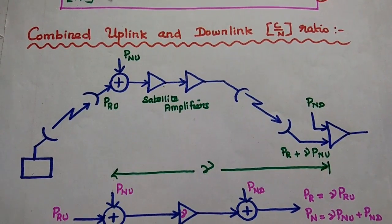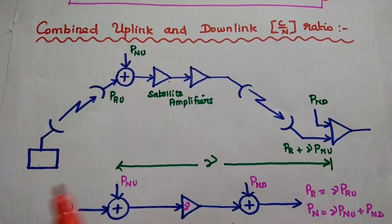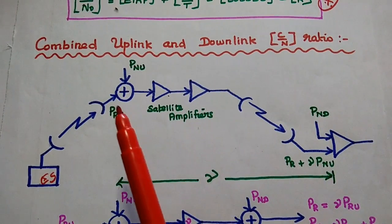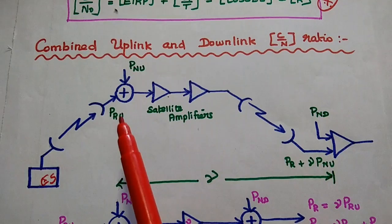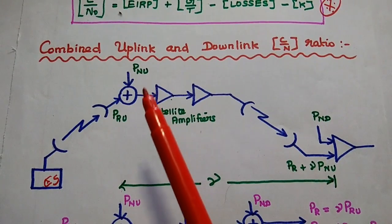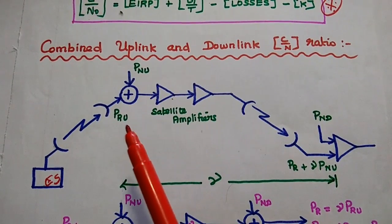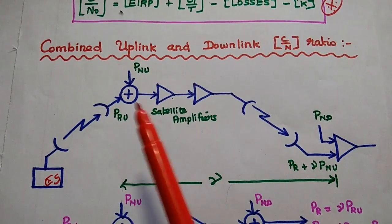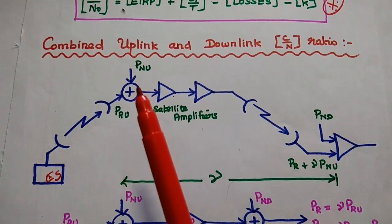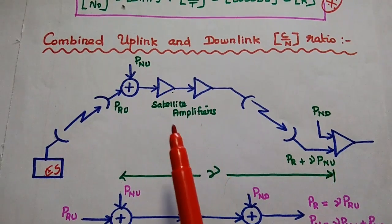Next, we are going to discuss the combined uplink and downlink C/N ratio. Here we consider both uplink and downlink. From the EIRP station, we transmit the signal through the transmitting antenna. We consider the carrier to noise ratio at the receiver input side of the satellite. Whenever the satellite receives the signal from the EIRP station, it receives both the noise power and the received power. Here PRU is the uplink average carrier received power, and PNU is the noise introduced in the uplink process.